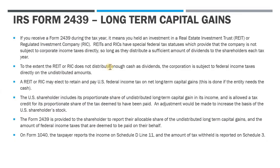The 2439 means you were invested in either a REIT or RIC. REITs are real estate investment trusts; RICs are regulated investment companies. These entity structures have special federal tax classifications — they're structured as corporations, but if they distribute enough of their capital during the year, the entity itself isn't subject to any federal income tax. The shareholders pick up the dividend income and pay tax at that level. To the extent a REIT or RIC doesn't distribute enough cash, the corporation is then subject to tax on its net undistributed income.